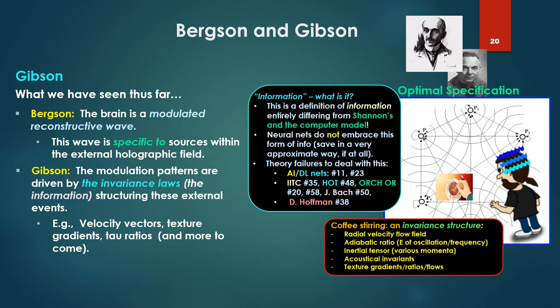For AI deep learning nets, there's some videos down the road. Information, integrated information theory, higher order thought theory, orchestrated reduction theory, Yosha Bach, Hoffman - these are some of the interesting complete failures to understand this.